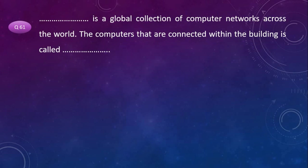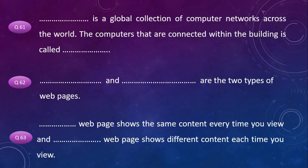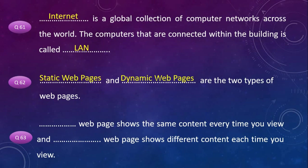Internet is a global collection of computer networks across the world. The computers connected within a building are called LAN. Static web pages and dynamic web pages are the two types of web pages. Static web pages show the same content every time you view them, and dynamic web pages show different content each time you view them.